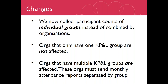The changes are that we will now be collecting participant counts of individual groups instead of combined by organization. For example, if your organization has four monthly groups that you host, we will be collecting four attendance reports instead of one report combined for your whole organization. This change is only going to affect organizations that offer more than one Kaleidoscope group — organizations that only offer one will be reporting just the same.